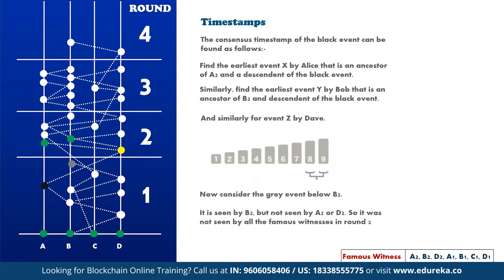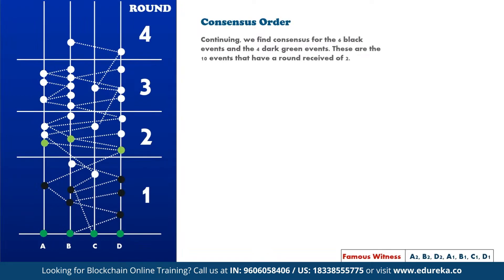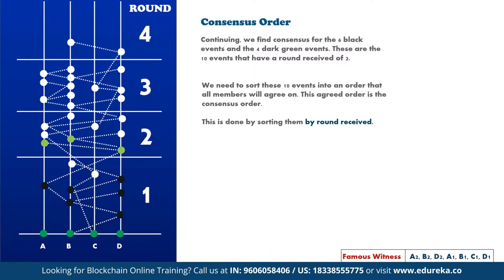The gray event below B2 is seen by B2 but not by A2 or D2, so it was not seen by all famous witnesses in round two, meaning its received round is later than two. We find the consensus for the six black events and four dark green events — these ten events have received a round of two and need to be sorted into an order all members will agree upon. This agreed order is the consensus order, done by sorting events in the order they receive their rounds. This process of voting, sorting transactions by timestamps and round received, keeps continuing, and the system serves as a list of all ordered transactions on the network.